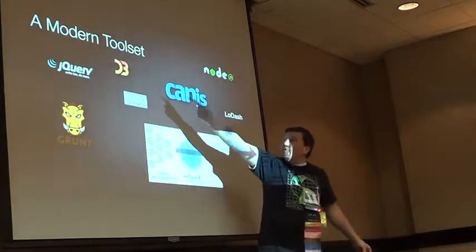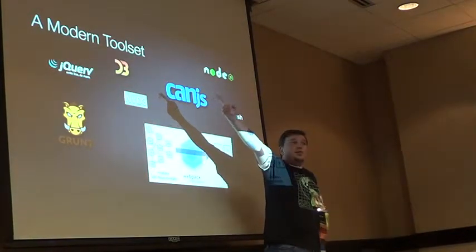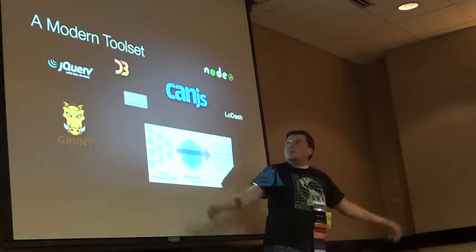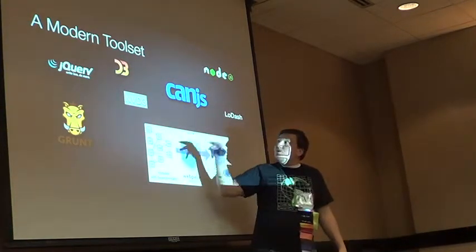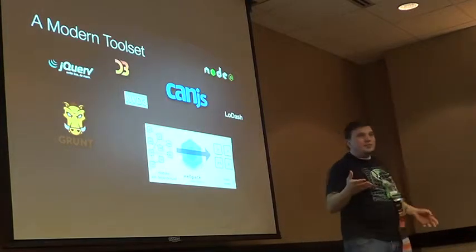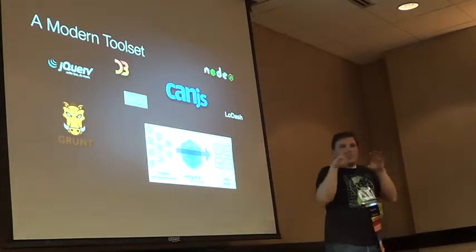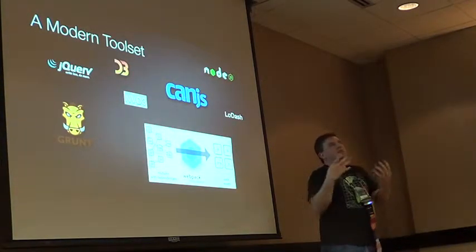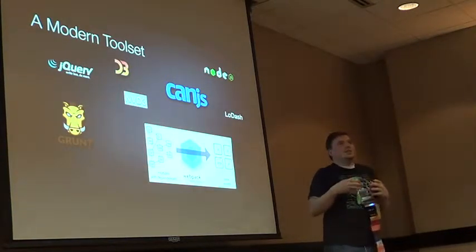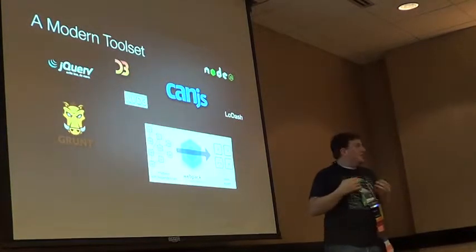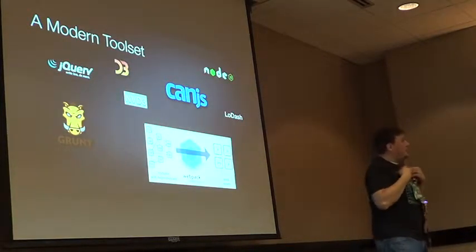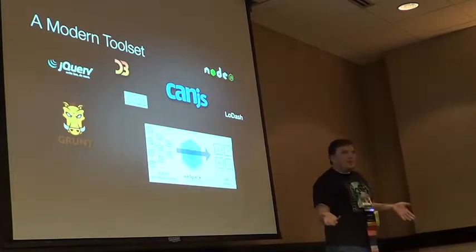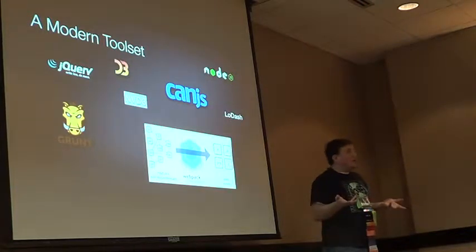NVD3 is a charting library built on top of D3. There's a panel about D3 tomorrow that you should all go to. D3 is a visualization library for JavaScript. D3 has a jQuery-esque type pattern, but it allows you to create SVGs and animate them and change their data in a way that's less painful than it would otherwise be. It creates SVG — that's mostly the reason people use it — but it can also create HTML.